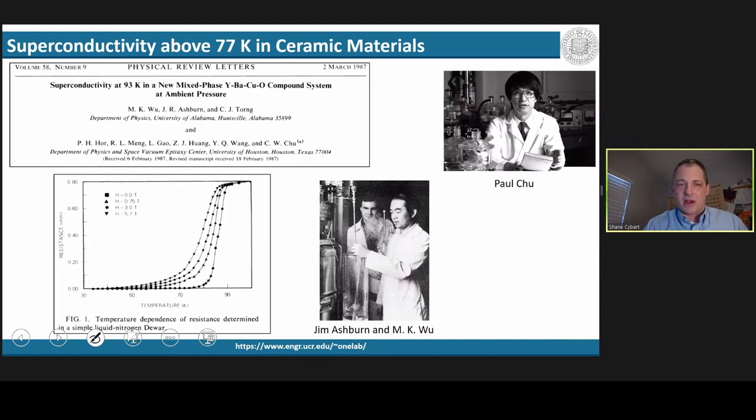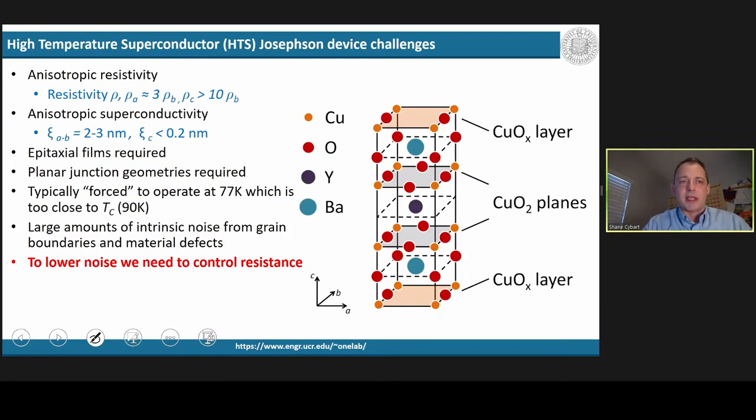The reason for that is because these high temperature superconductors bring a whole set of new challenges to the devices. They're very complex oxide ceramic materials, as you can see from this crystal structure, and in this structure, the resistivity and the superconductivity, all the electrical properties vary depending on which axis you look down, so it's different along A than B than C.